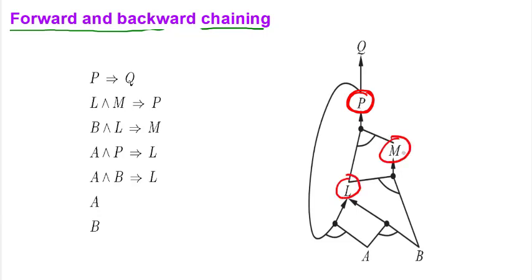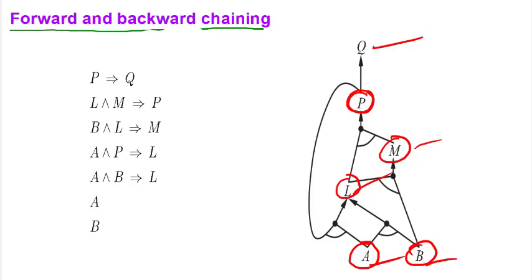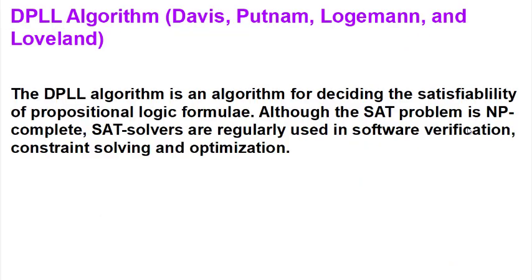We can also prove this using backward chaining. Working backward from the goal Q, we check what is needed for L, then for M, tracing back through the tree. Since we know the base facts are true, the rules fire and we can infer Q. This is how forward and backward chaining work.